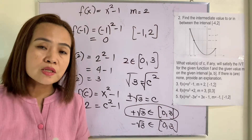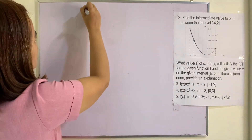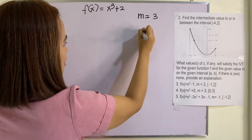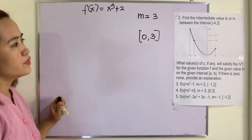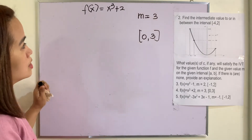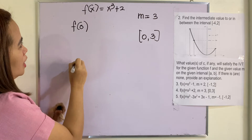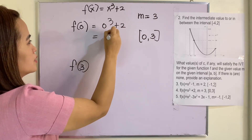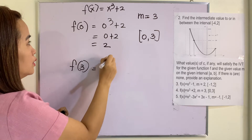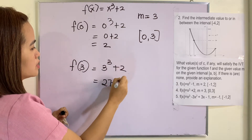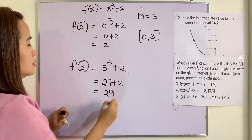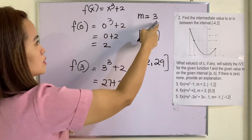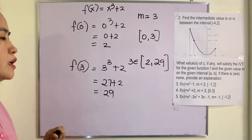Example 4. We have f(x) equals x cubed plus 2. Our m is 3 and the given interval is [0, 3]. Let us verify whether 3 is an element of f(0) and f(3). We have 0 cubed plus 2, which is 0 plus 2 equals 2. And 3 cubed plus 2 is 27 plus 2, which is 29. So the interval is [2, 29]. Is 3 an element of [2, 29]? Yes, of course.